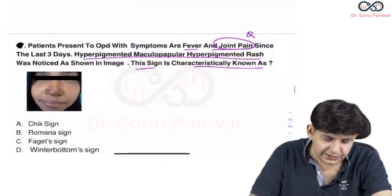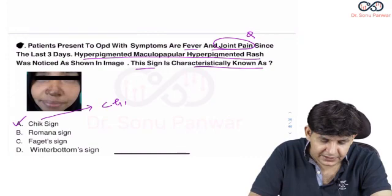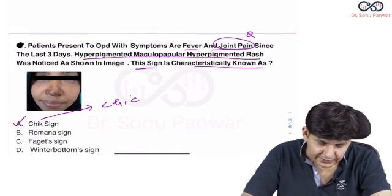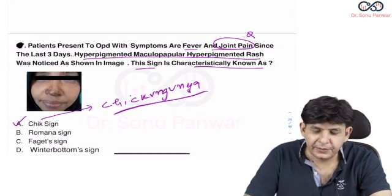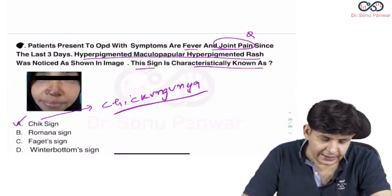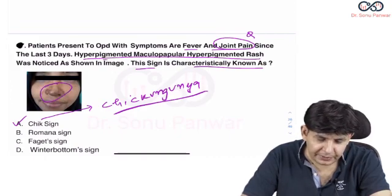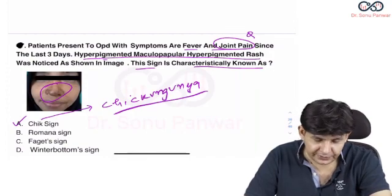The answer to this question is this is Chik sign, and this Chik sign as the name suggests is seen in Chikungunya. Basically this is seen in Chikungunya and obviously the joint pain is a characteristic of Chikungunya. This typical hyperpigmentation, maculopapular type, is typically seen in Chikungunya.